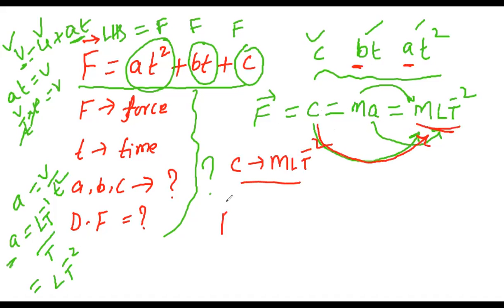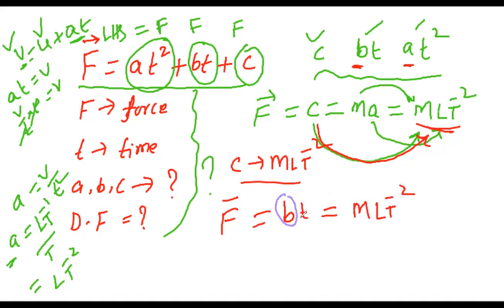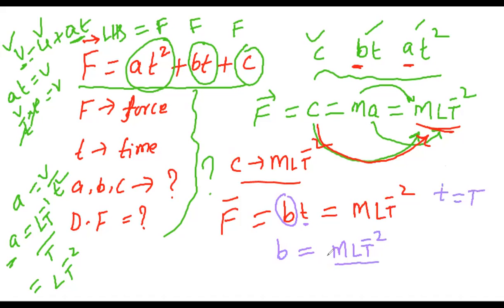So how do we calculate? Write the dimensional formula of force again: MLT⁻². Now I want to find B. I should remove this T. T has dimensional formula capital T. When B×T = MLT⁻², to isolate B, I bring T to the denominator. So B = MLT⁻² / T.